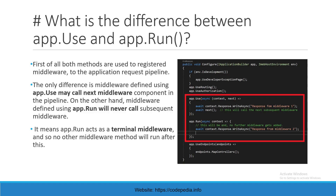Here you can check the Configure method where we have added built-in middleware — for example, app.UseRouting and app.UseAuthorization. We have also added two custom middleware: the first one using app.Use, and the next using app.Run. The app.Use will call the next subsequent middleware, whereas app.Run will end there.